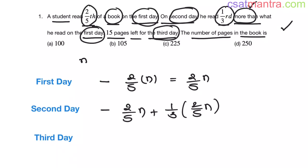Now, on third day, he read 15 pages my friends. Now, sum of the pages read on first day and sum of the pages read on second day and sum of the pages read on third day. These sums should be n my friends. Okay, total number of pages.